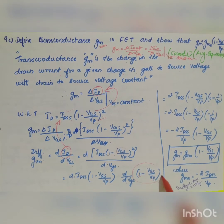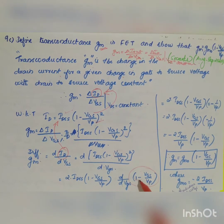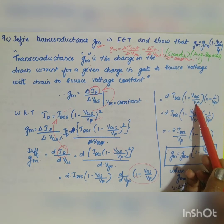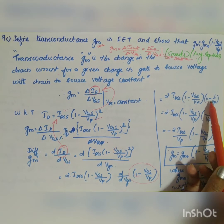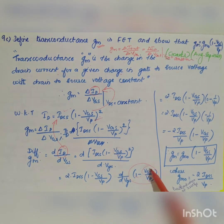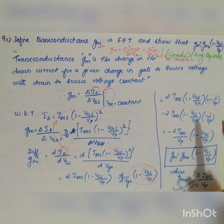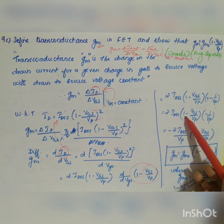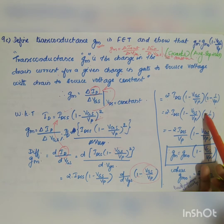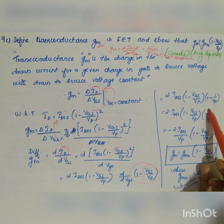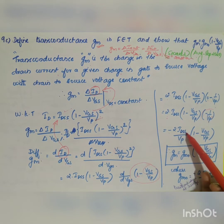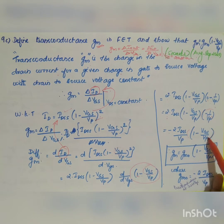Differentiating (1 minus vgs/vp) with respect to vgs: the constant differentiates to 0, and vgs differentiates to 1, giving minus 1 by vp. So gm equals 2 idss into (1 minus vgs divided by vp) into minus 1 by vp, which rearranges to minus 2 idss divided by vp, multiplied by (1 minus vgs divided by vp).